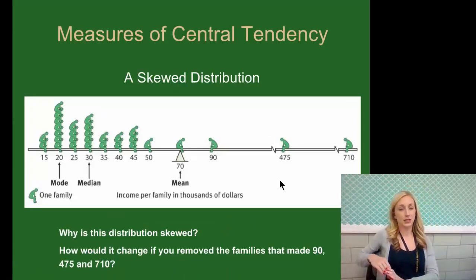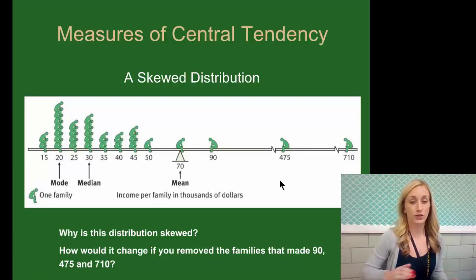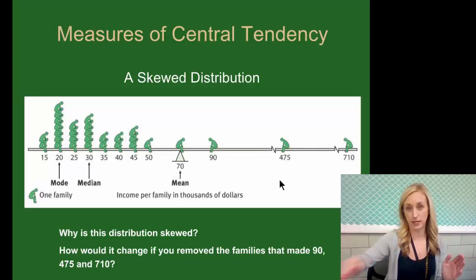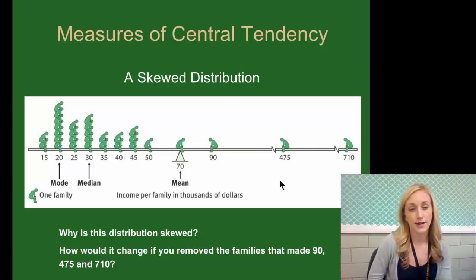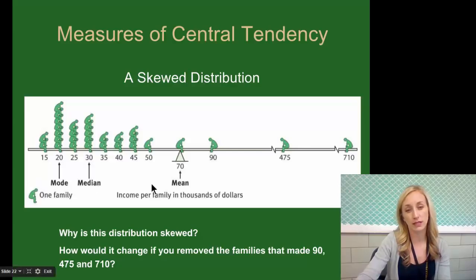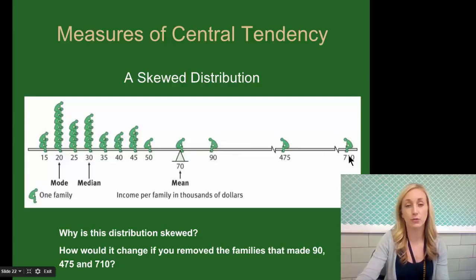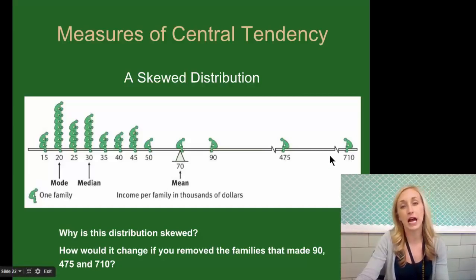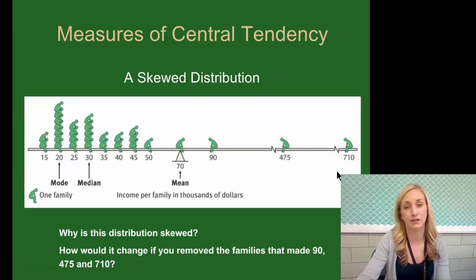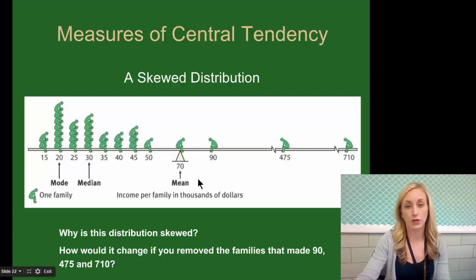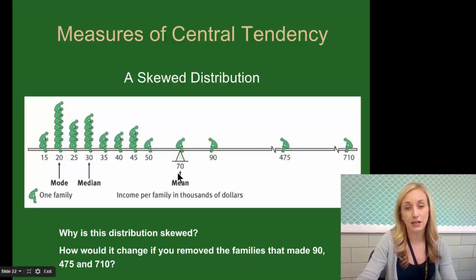Measures of central tendency in a skewed distribution look differently — the curve is not normal; it's going to be skewed. Notice the mode, median, and mean: the mean is very impacted by skewed data. The values 94.75 and 7.10 are what you'd call outliers — extreme scores. These extremely high scores show a positive skew of the distribution. Note that the mean is what is most impacted by outlying data. Your median is what is still most reliable.